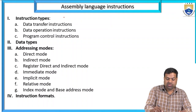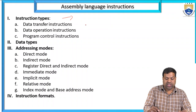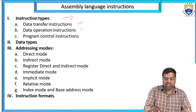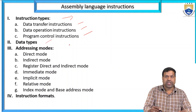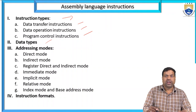We are dividing this into: first, instruction type — there are three types: data transfer, data operation, and program control. After that, data types — we will discuss each one later.